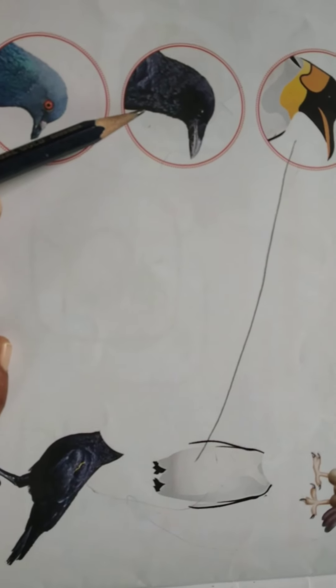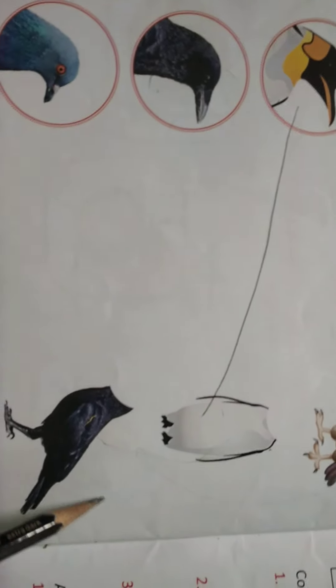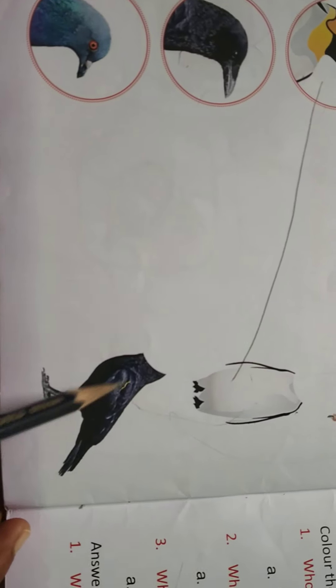This is crow. Crow will be black color children. Find black color body here. Here it is.